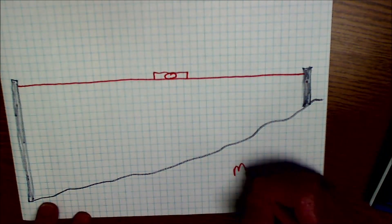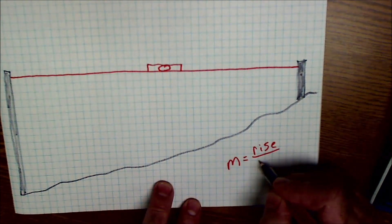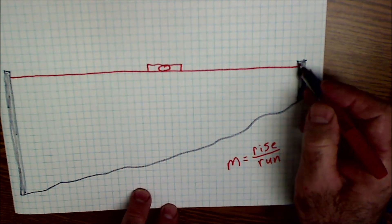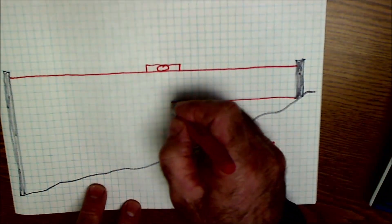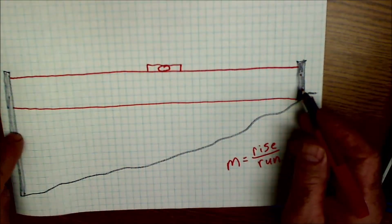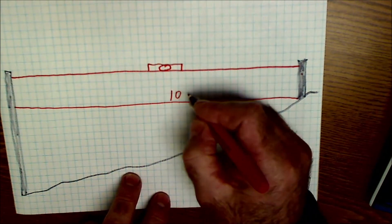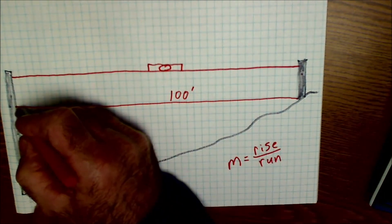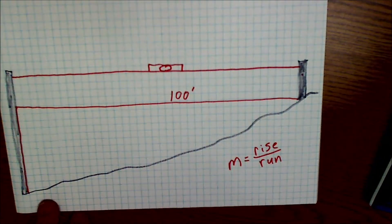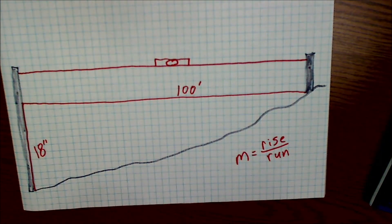So slope in math class is represented with an M. It's going to be rise over the run. I could be quite a few inches up here — it doesn't really matter as long as I keep track of it, and I'm not drawing this to scale. But if I have my two stakes, and let's say I measured that string out to be a hundred feet long and I subtracted this distance to this distance right here, and I'm 18 inches off of the ground, then to find slope I convert.